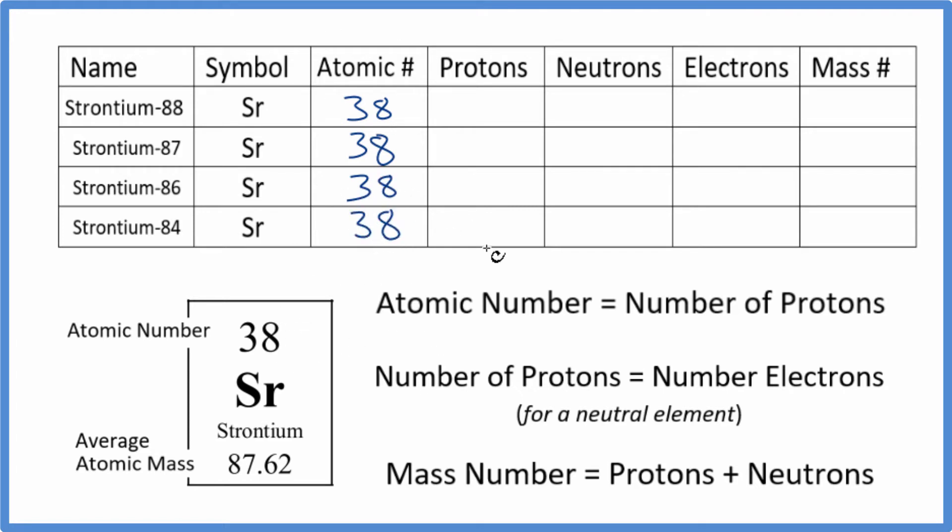The atomic number is equal to the number of protons. So we can just write 38 in for all of these. So strontium, atomic number's 38, number of protons, 38 as well.